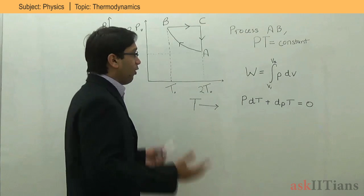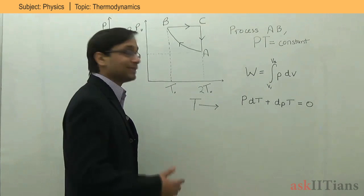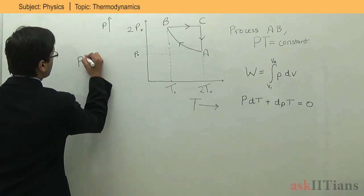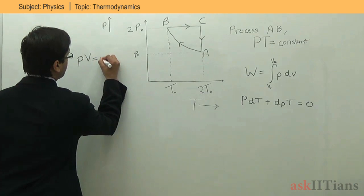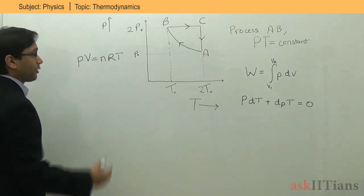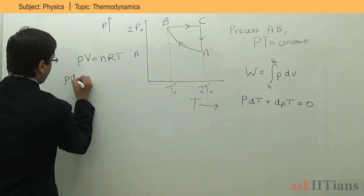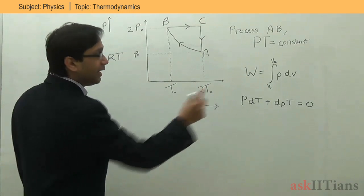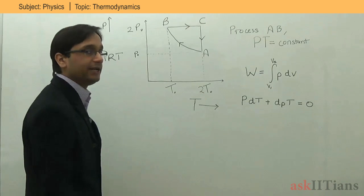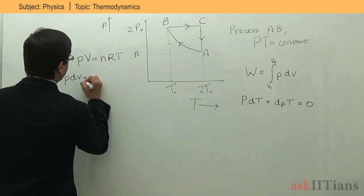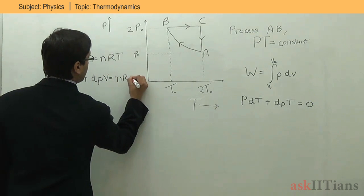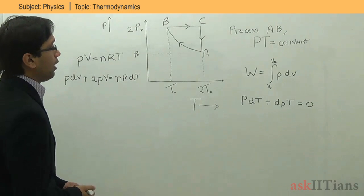The second equation we use is the ideal gas equation: PV = nRT. We differentiate this equation as well. Our main aim is to substitute P dV in terms of temperature so that we can easily integrate and get the work done. Differentiating PV = nRT gives: P dV + V dP = nR dT.